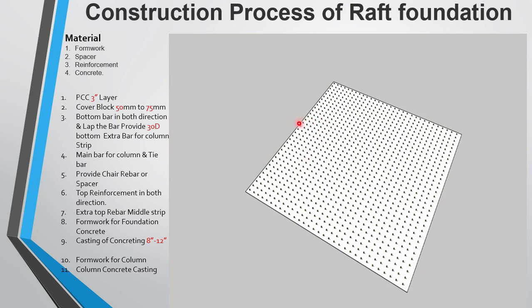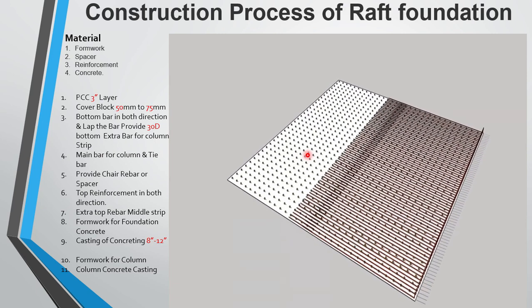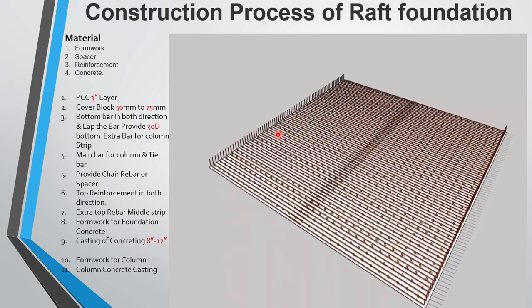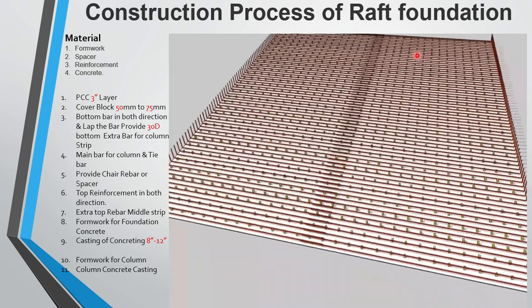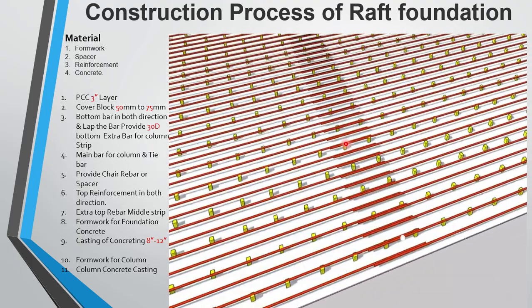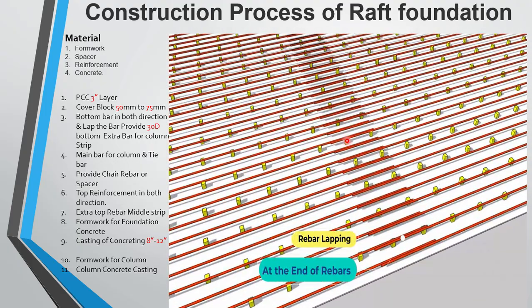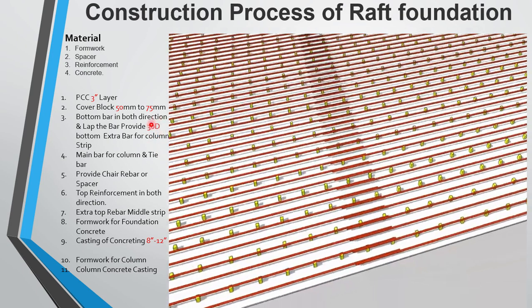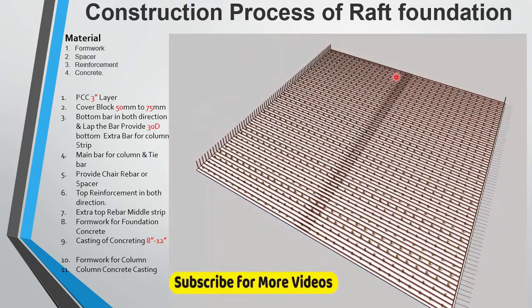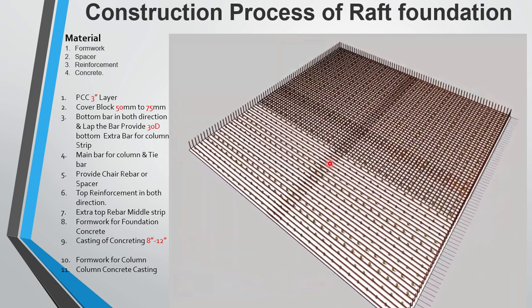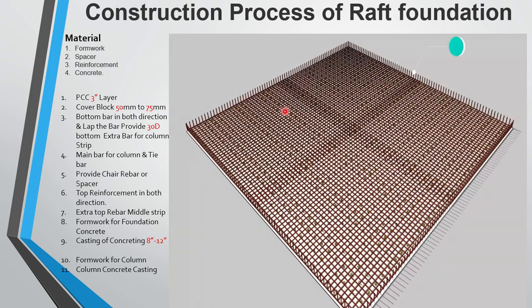Then the rebar in the X direction are laid. This is the bottom main rebar in the X direction or Y direction. We leave 2 bars here, and the formula for lapping is 30 times the diameter of the main bar. After that, we provide the bottom reinforcement in the Y direction, so the bottom reinforcement is provided in both directions.